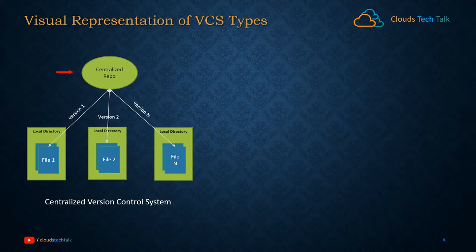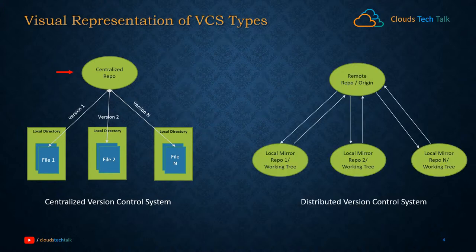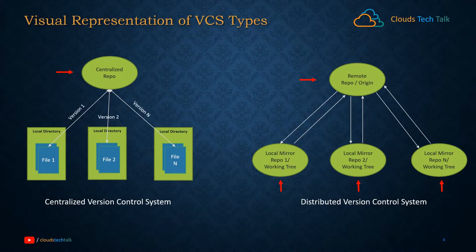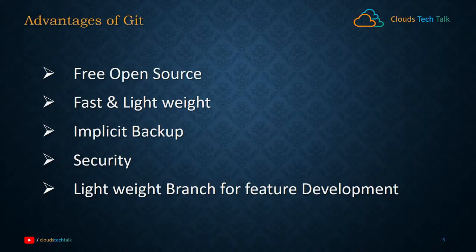That's why the distributed version control system came into the picture. In a distributed VCS, we have a remote repository — also known as origin — and multiple local mirrors of that repository, each being a complete replica. These local repositories exist on each contributor's system. If the server goes down, any contributor's copy can be restored to the server. Distributed systems do not rely on a centralized server — every checkout is a full backup, and contributors can commit, create branches, and perform operations without any connection to the remote.